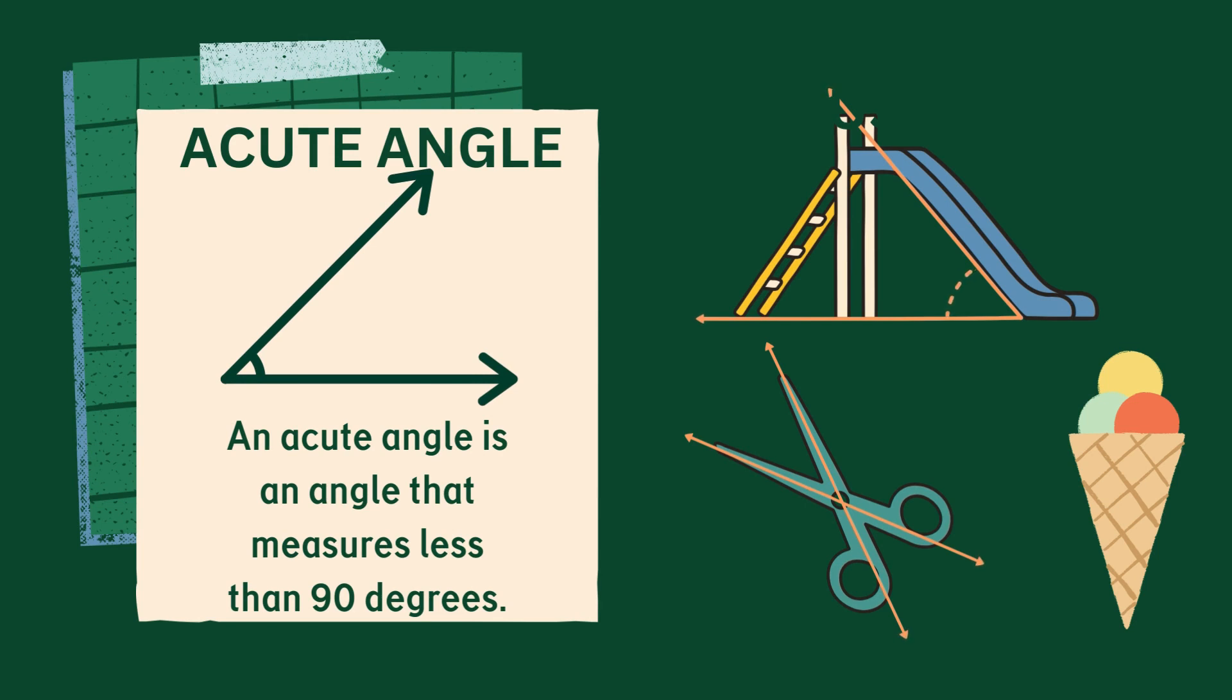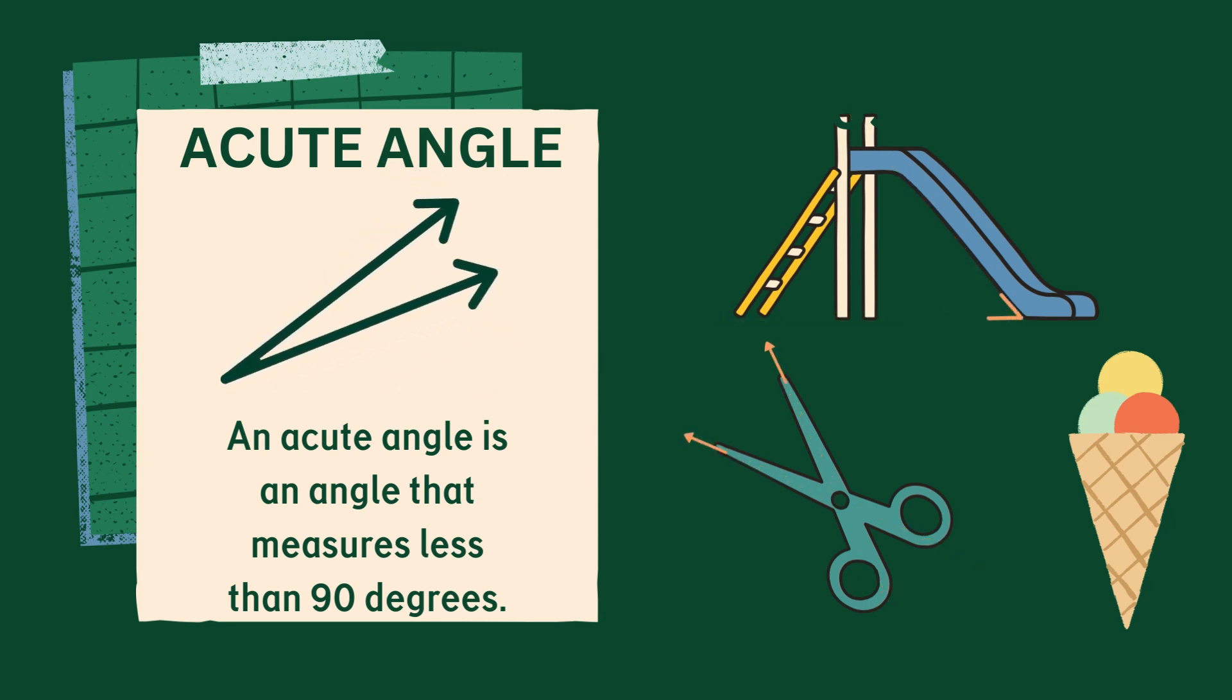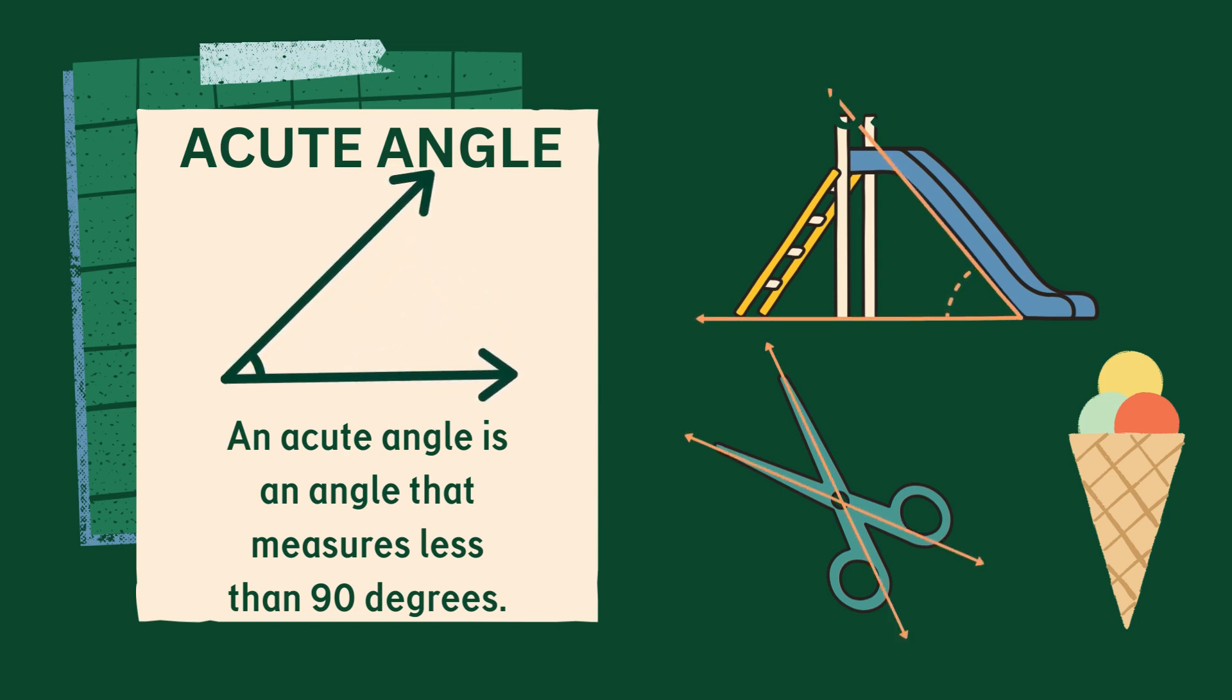Acute angles are angles that measure less than 90 degrees. Acute angles are often referred to as sharp or pointed angles because they resemble the point of a needle. These angles are typically associated with sharp or angular objects such as a triangle or a pyramid. A pair of open scissors and the base of a cone look like an acute angle. Also, as shown on the screen, the slide also makes one acute angle with the ground.